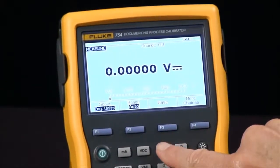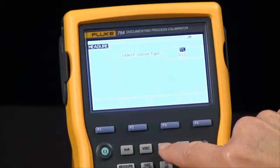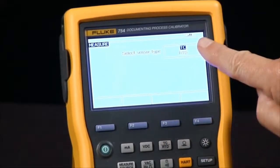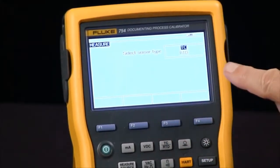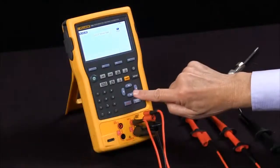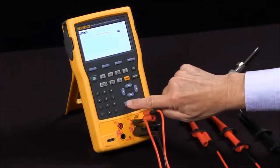All we have to do at this point is push the thermocouple RTD button and we get a choice of a thermocouple or an RTD. So I'm going to arrow down, highlight the RTD, and hit enter.